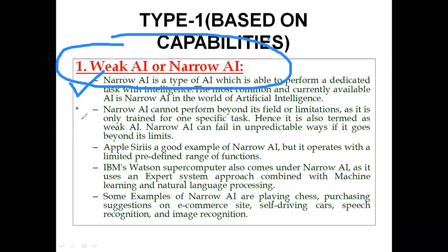Narrow AI can perform a dedicated task with intelligence, but it can apply that intelligence only to the task for which it has been designed. For example, a chess-playing program uses AI but is designed only to play chess. If you ask that chess program to play another game like Ludo, it will not be able to do so.